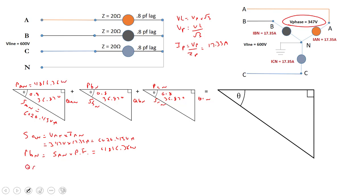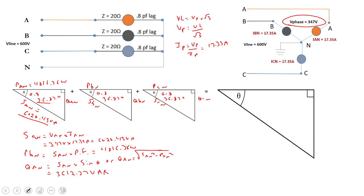To calculate Q_A-to-N, there are a couple of methods. I can take S_A-to-N and multiply it by sine of theta using trig — hypotenuse times sine of the angle gives Q_A-to-N. Alternatively, I can use Pythagorean theorem: Q_A-to-N equals the square root of S_A-to-N squared minus P_A-to-N squared. Either way, that comes to 3612.27 VAR.